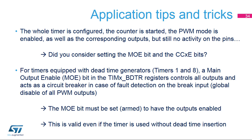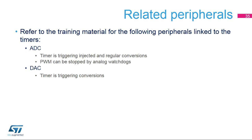For timers equipped with dead-time generators, timers 1, 8, 15, 16, and 17, a main output enable or MOE bit in the TIMX BDTR registers controls all outputs and acts as a circuit breaker in case of fault detection on the brake input, causing a global disable of all PWM outputs. The MOE bit must be set or armed to have the outputs enabled. This is valid even if the timer is used without dead-time insertion for general-purpose applications. The timer is linked with multiple on-chip peripherals.